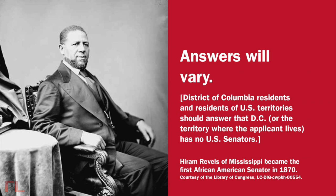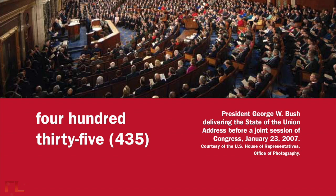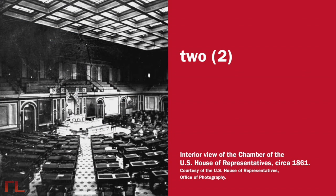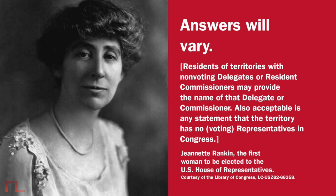District of Columbia residents and residents of U.S. territories should answer that D.C. or the territory where the applicant lives has no U.S. Senators. The House of Representatives has how many voting members? 435. We elect a U.S. Representative for how many years? Two. Name your U.S. Representative. Answers will vary. Residents of territories with non-voting delegates or resident commissioners may provide the name of that delegate or commissioner, or state that the territory has no voting representatives in Congress.